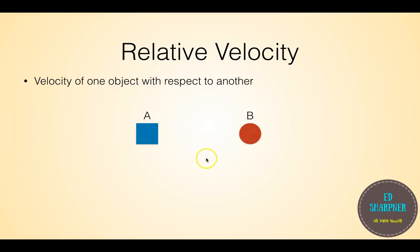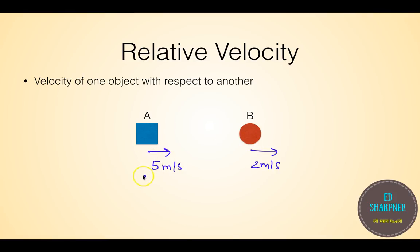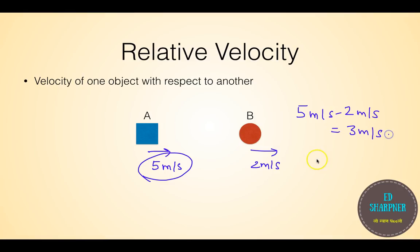Now what happens if body A is moving to the right and body B is also moving to the right, with speeds of 5 meters per second and 2 meters per second respectively? Body B would feel like body A is moving slower than its actual speed. So the relative velocity will be 5 minus 2, which gives 3 meters per second. This is how relative velocity actually works.